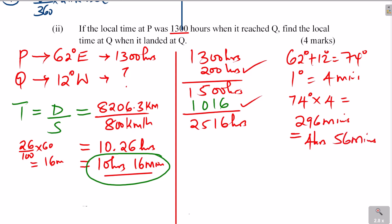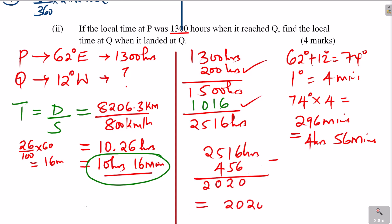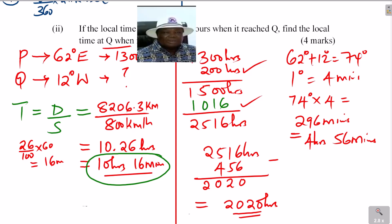Now we account for the time difference between longitudes. The longitude difference is 62 + 12 = 74 degrees. At 4 minutes per degree, 74 × 4 = 296 minutes = 4 hours 56 minutes. Since Q is to the west, it is behind in time. So local time at Q = 25:16 − 4h 56min = 20:20 hours. The local time at Q when the plane landed is 2020 hours.